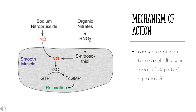The downstream cascade results in reduced intracellular concentrations of calcium, through processes including inhibition of the IP3-mediated pathway, phosphorylation of large calcium-activated potassium channels leading to cell hyperpolarization and reduced calcium influx, and increased calcium efflux via the Ca2+ ATPase pump. Reduced intracellular calcium concentrations lead to dephosphorylation of myosin light chains and relaxation of smooth muscle cells.